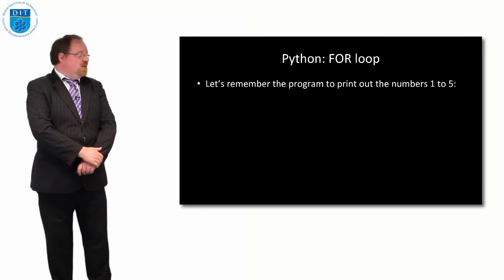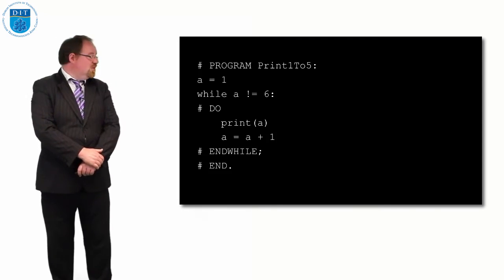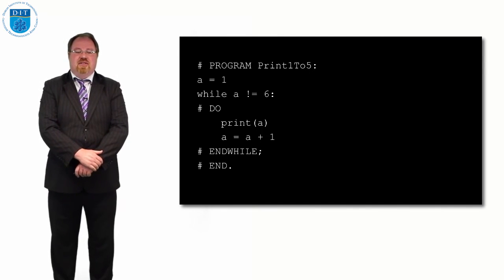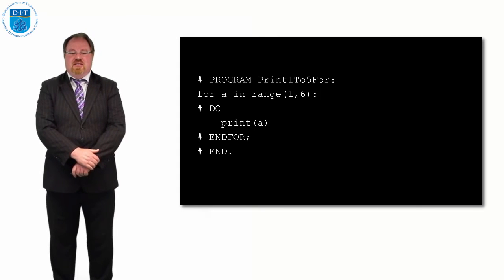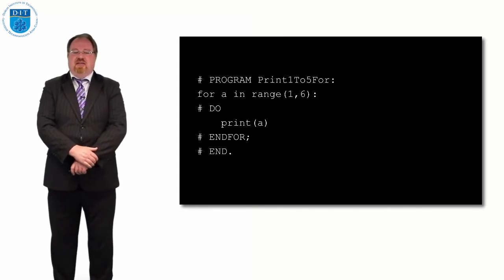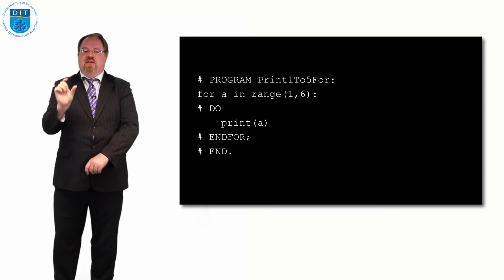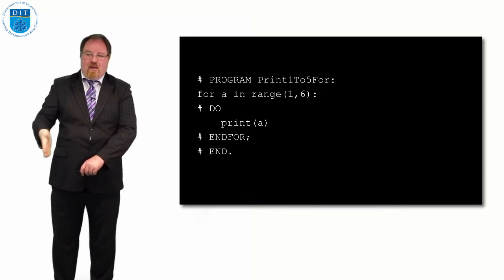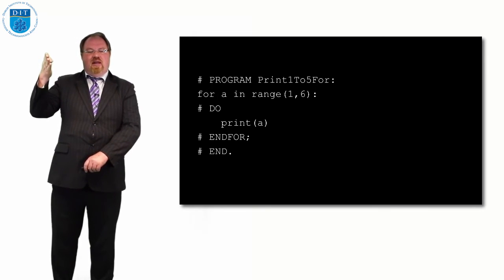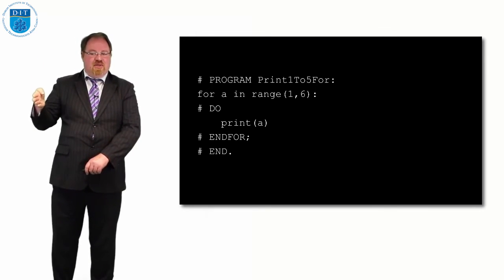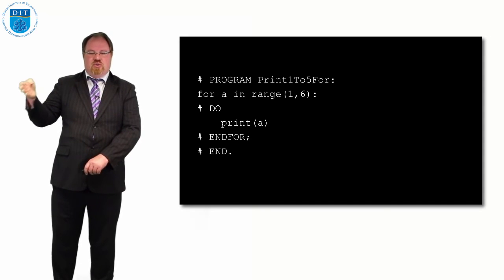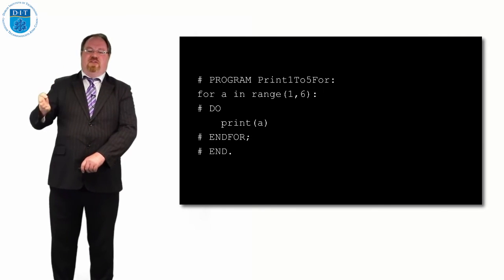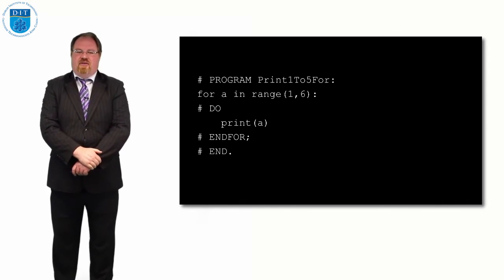So if we wanted to print out the numbers 1 to 5 using a for loop, we just say 'for a in the range 1 to 6, do print out a.' Range 1 to 6 means it will print out 1, 2, 3, 4, 5 and stop at 5 - 6 is the value at which it stops. So this will print out 1, then 2, then 3, then 4, then 5 and then stop. That's a for loop.